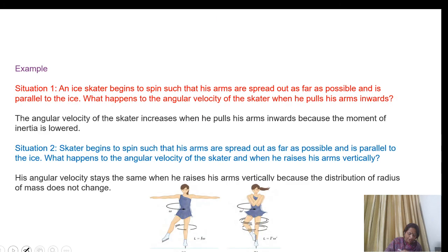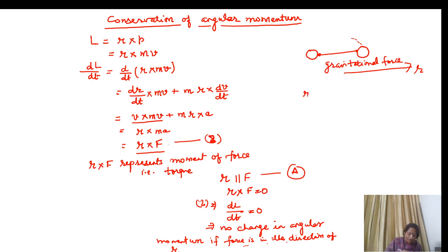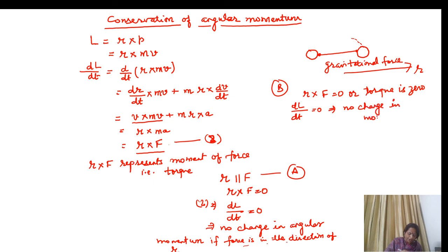The second situation: suppose the torque (R × F) is zero. Here we are not specifying the direction of F — we are simply saying the net torque is zero. Then again dL/dt = 0, which implies no change in angular momentum, or momentum is conserved. This is the law of conservation of angular momentum: if the total net torque on an object is zero, then angular momentum is conserved.